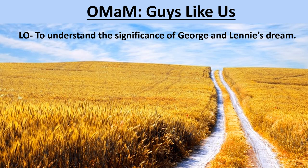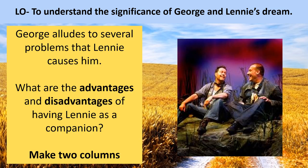Moving on to our third lesson of week one. Today we're going to understand the significance of George and Lenny's dream — this is a dream as in an aspiration, a hope for the future. The title we've given this lesson is 'Guys Like Us.' So far in chapter one, George has alluded to several problems that Lenny causes him along the way. The first thing I'd like you to do — again, this is in your work booklet on Show My Homework — is make a list of maybe four or five advantages of having Lenny around and disadvantages of having Lenny around. Pause the video; that task should take no more than three to five minutes.